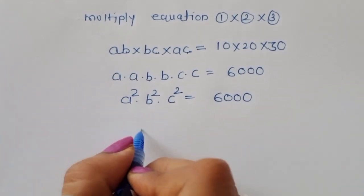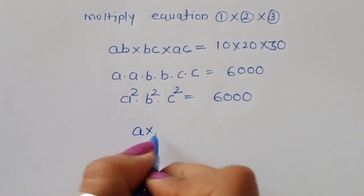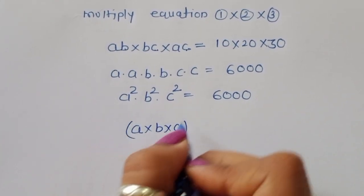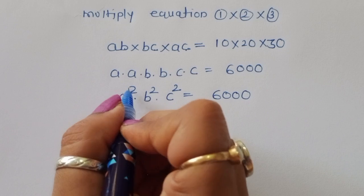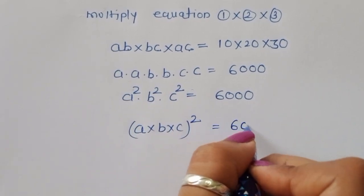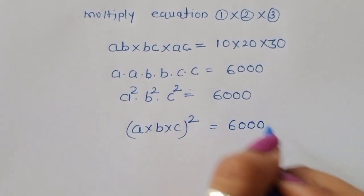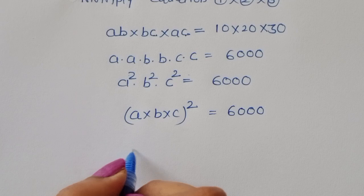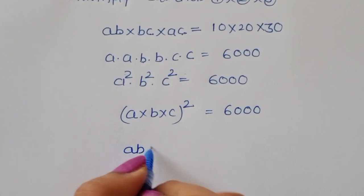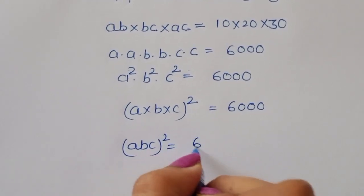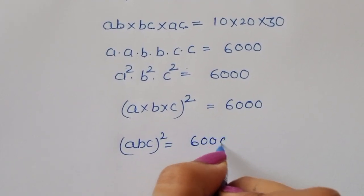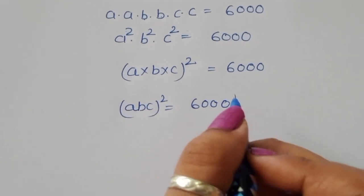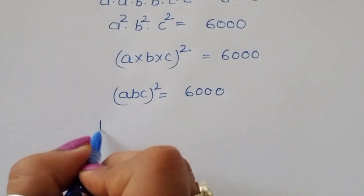We can write A squared times B squared times C squared as (ABC) whole squared, because each variable is squared. So (ABC) whole squared is equal to 6000.